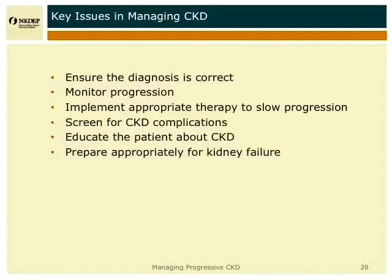It's important to monitor progression with EGFR and urine albumin. It's important to implement the appropriate interventions to slow progression, which I'm going to talk about. Screen for complications, educate the patient, and then help prepare them for kidney failure and its treatment.